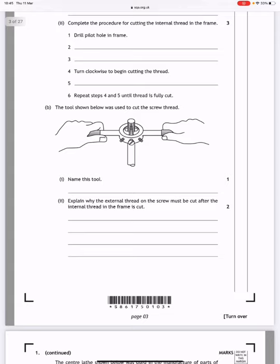Explain why the external thread on the screw must be cut after the internal thread in the frame is cut. So if you cut the internal thread and then cut the external thread and you try to screw it in, if it's too tight, what you can do is you can use the die, make adjustments to the die to cut more material so that it fits properly.